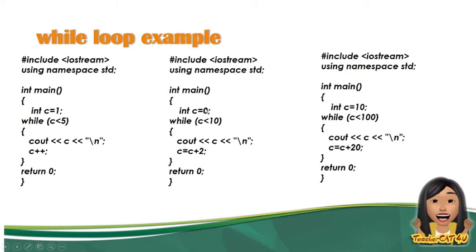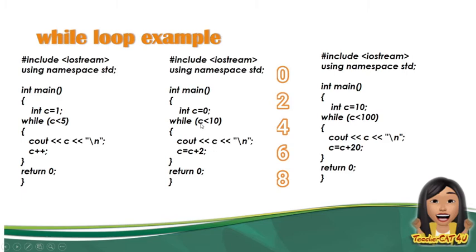Ito naman yung isa pang sample: initialization niya is 0, nag-start sa 0. Ang 0 ay mas maliit sa 10, didisplay niya ang value ni C na 0. C is equal to C plus 2, so 0 plus 2 is equal to 2. Ang 2 ay mas maliit sa 10, didisplay niya ang 2. Yung C na ninyo magiging 4, didisplay niya ang 4, then 6, then 8 — kasi mas maliit yun sa 10. 8 plus 2 is equal to 10, ang 10 ay hindi mas maliit sa 10. Kaya ang didisplay lang niya ay 0, 2, 4, 6, 8.